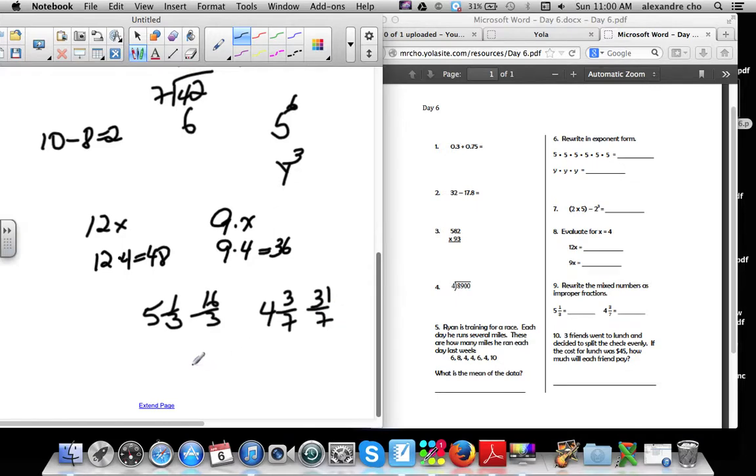And then three friends went to lunch, blah blah blah. Total is 45 and you want to split it evenly, so you got 45 divided by 3, and that's simply 15. Very simple. They do get harder, trust me. So that's day 6 and I'm going to end that right now.